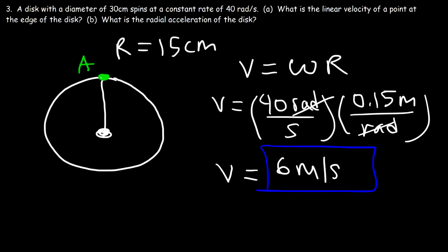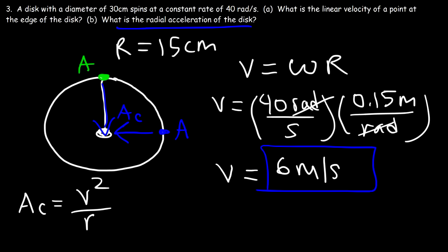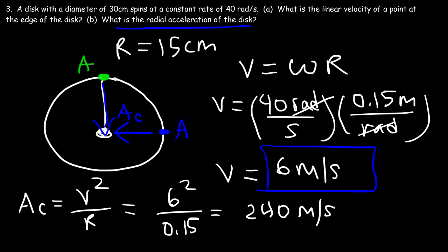Now that we have the linear velocity, how do we calculate the radial acceleration? The radial acceleration is the same as the centripetal acceleration — it always points toward the center of the circle. Using the formula v squared divided by r: that's 6 squared divided by 0.15. Six squared is 36, and 36 divided by 0.15 is 240. So the radial acceleration is 240 meters per second squared.